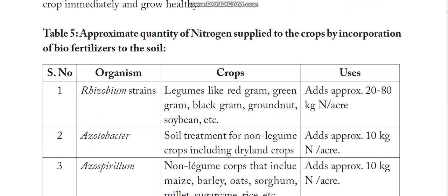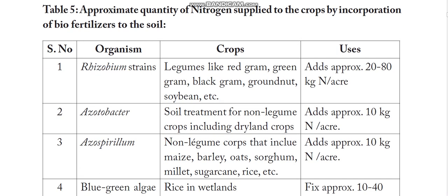Coming to nitrogen supply through microbes — let us see how much nitrogen each microbe can supply to the crop. Rhizobium strains, which are used for legumes like red gram, green gram, and black gram, add approximately 20 to 80 kg of nitrogen per acre — a very high quantity.